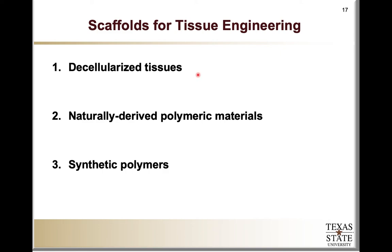That process is known as decellularization. What you're left with is the extracellular matrix proteins that form a three-dimensional scaffold. You are retaining, for the most part, the mechanical properties of the original tissue, and you are retaining some of those biomolecular cues without actually having cells. So you could utilize that as a scaffold for incorporation of other cells or for use in a different patient.